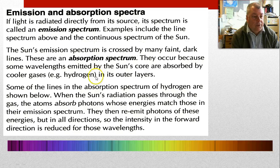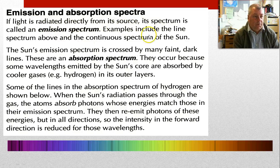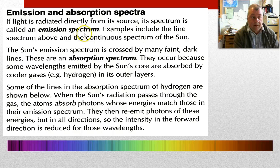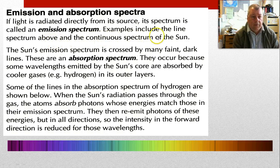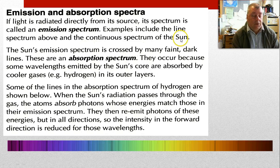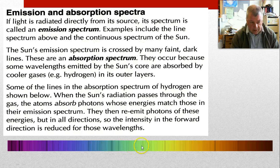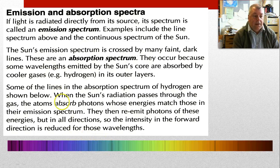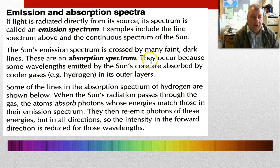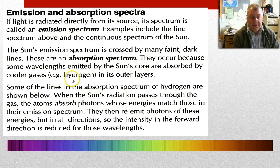Let's read this quickly. Emission and absorption spectrum: if light is radiated directly from its source, its spectrum is called an emission spectrum. Examples include the line spectrum we've been talking about and the continuous spectrum of the sun. We'll be looking at the solar spectrum in class. The sun's emission spectrum is crossed by very faint dark lines. Here's an example—this is the solar spectrum. Depending on the resolution of your screen, you may see lots of lines in it. These lines are gaps, and these are absorption spectrum. They occur because some wavelengths emitted by the sun's core are absorbed by the gases in its outer layers.